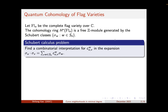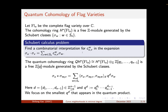We consider the complete flag variety over C. The cohomology ring of the flag variety is a free C-module generated by the Schubert classes. These are the cohomology classes of opposite Schubert varieties. The famous Schubert calculus problem asks for a combinatorial interpretation for the structure constants, where we take the product of two Schubert classes and expand it back into a combination of Schubert classes. The quantum cohomology ring QH is isomorphic to the cohomology ring tensored with a polynomial ring over N-1 variables, and is a free C[Q]-module generated again by these Schubert classes. The quantum product, this star, is a deformation of the usual cohomology product.